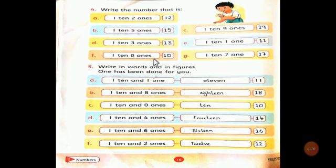One ten and zero ones is ten. One ten and nine ones is nineteen. One ten and one one is eleven. One ten and seven ones is seventeen.